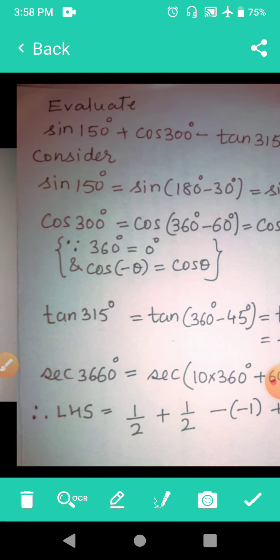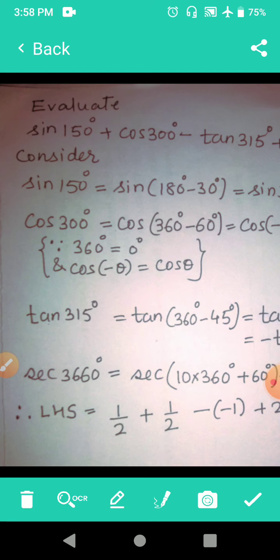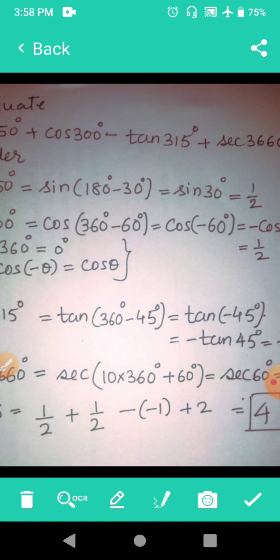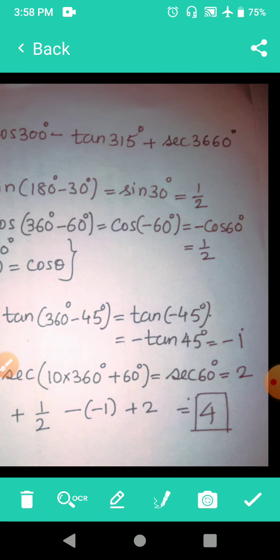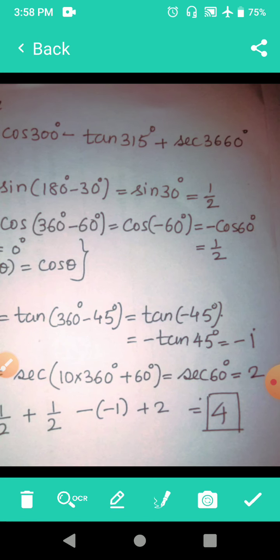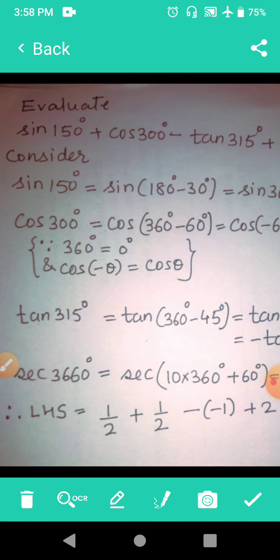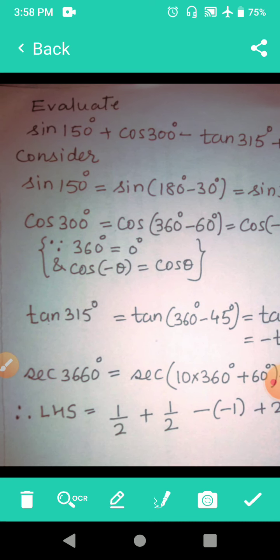Now third value tan 315 degrees is tan 360 minus 45. 360 being 0, it is tan of minus 45. Tan of minus theta is minus tan theta, so this minus comes out which gives you minus tan 45 which is equal to minus 1.